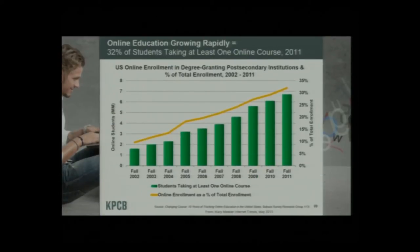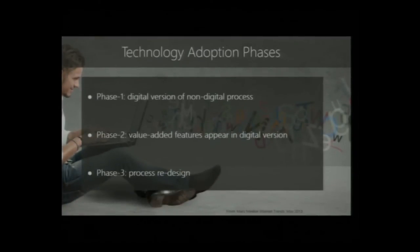There are generally three phases in adoption of digital technologies. The first is we just take whatever we did before and put it online — MIT OpenCourseWare in 2001–2002 was that. The second is where you do value-added features on top: MOOCs are there today — we've added quizzes, peer-to-peer grading, discussion forums, made them more interactive. But the fundamental things happen when there's a whole process redesign because of digital technologies, similar to how entertainment distribution and commerce are now in a fundamentally different process.